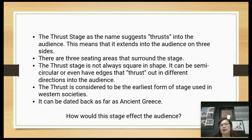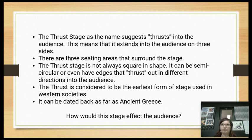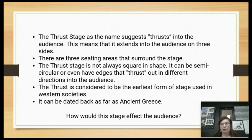The thrust stage can be any number of shapes — it's not always square — but it still presents elements that a director would have to work around. How exactly do they work around the fact that the audience is going to see the backs of some of the characters at some point in time?